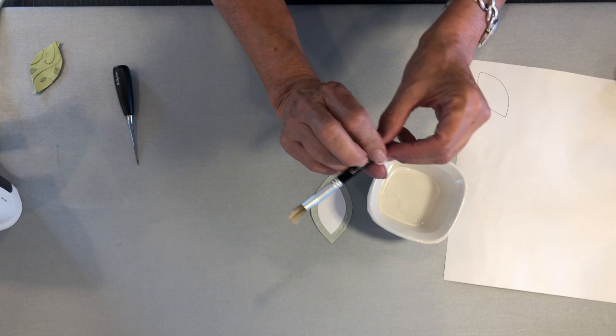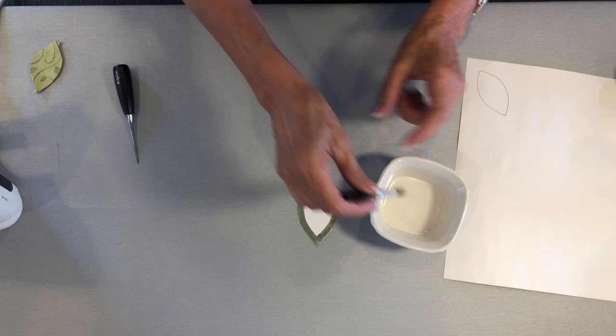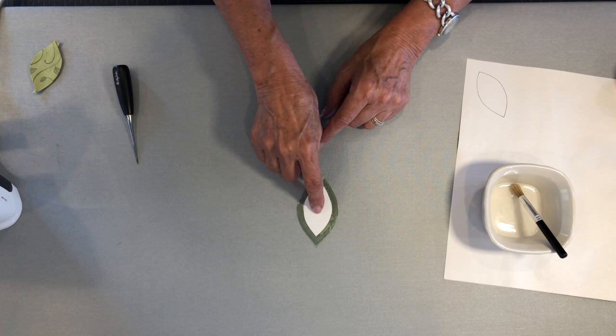I've got a little starch brush here. This is my Jalili Studio Starch Brush, and because of how the bristles are put together, it holds a lot of liquid and allows you to paint your seam allowance with that liquid. That gets just the seam allowance wet. I don't want to wet the template.